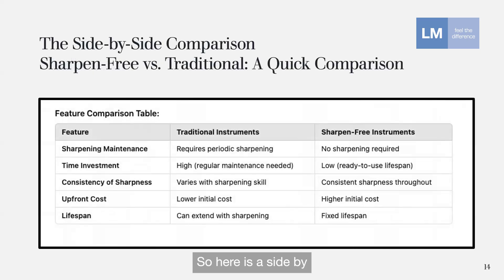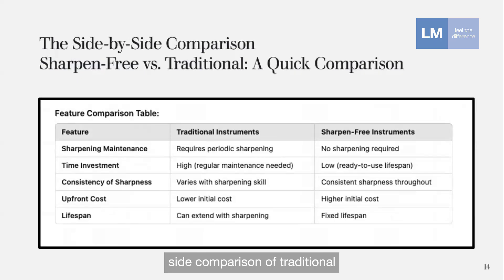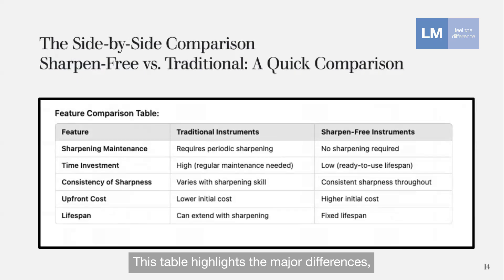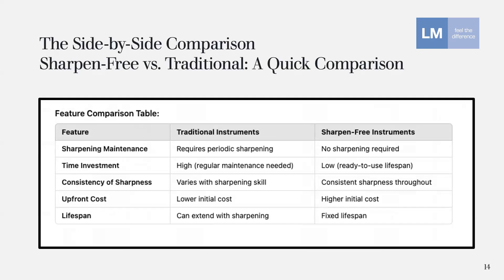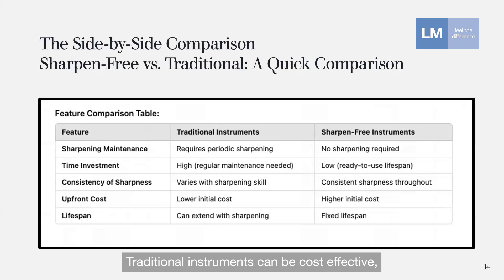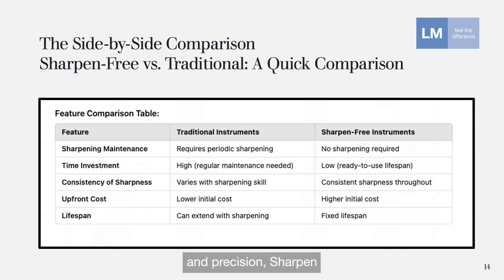Here is a side-by-side comparison of traditional and sharpen-free instruments. This table highlights the major differences, making it easy to see what each option offers. For practices with the time and skills to sharpen, traditional instruments can be cost-effective; but for those prioritizing efficiency and precision, sharpen-free instruments may be the better choice.